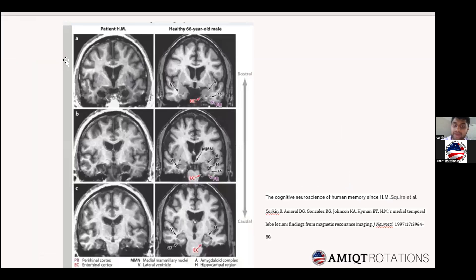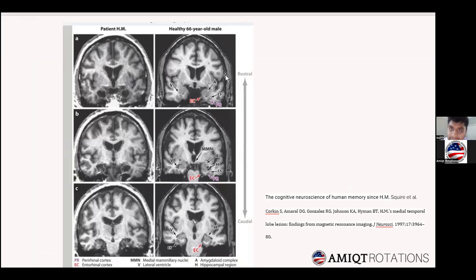This MRI shows a comparison between patient HM and a healthy 66-year-old male. V stands for lateral ventricle and A is amygdala. You can see the healthy 66-year-old male versus patient HM at 67 years old — the hippocampus is resected and there is no anterior rhinal complex.